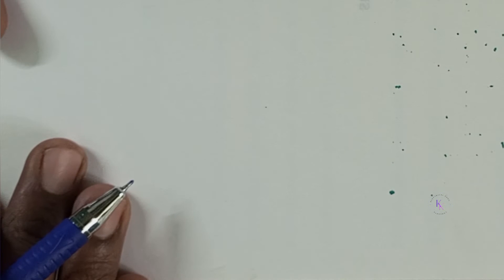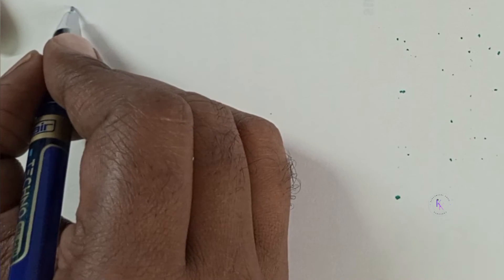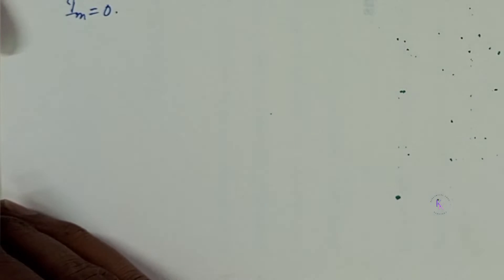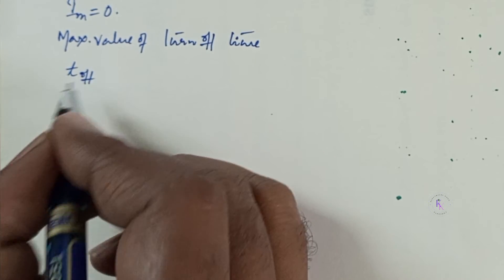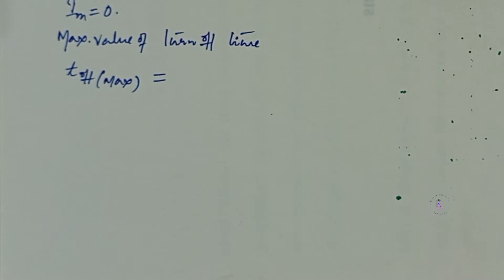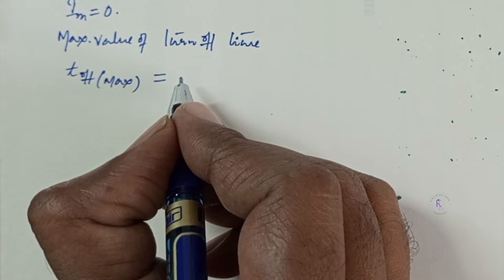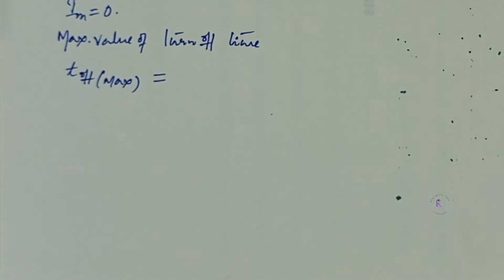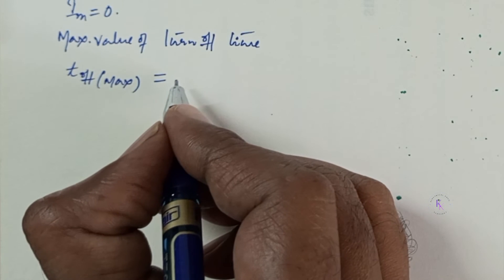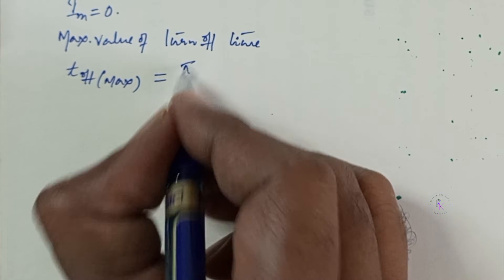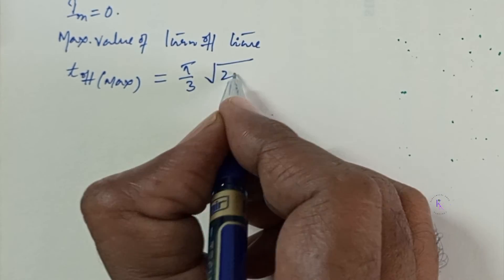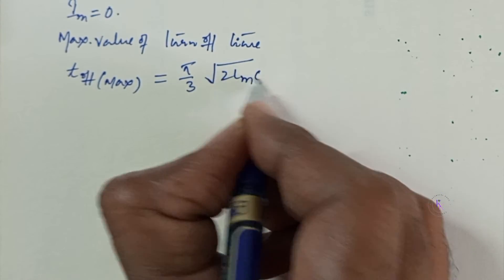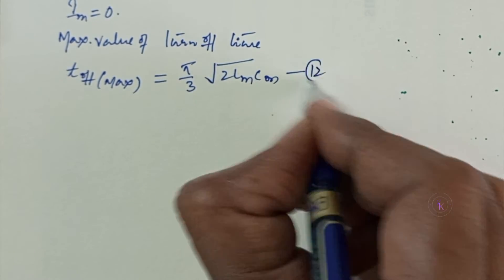The circuit turn-off time is dependent on the load current IM and will be maximum when IM equals 0. The maximum value of turn-off time: when IM equals 0, x equals 0; substituting into equation 10 gives tof_max equals π/3·√(2LM·CM) — equation 12.